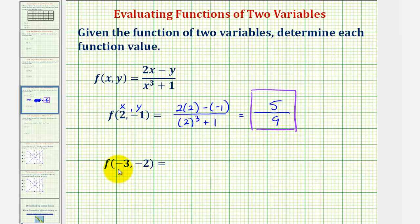For the second example we have f of negative three comma negative two, so we'll substitute negative three for x and substitute negative two for y.